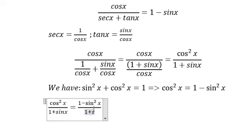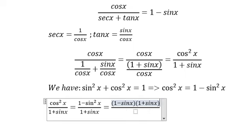We have 1 minus sine x and 1 plus sine x. Here we have 1 plus sine x on the numerator and denominator. They will simplify together and we get 1 minus sine x.